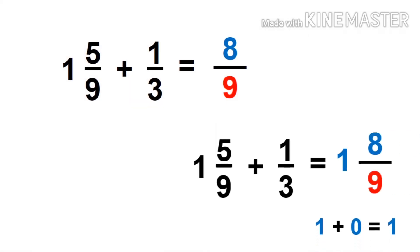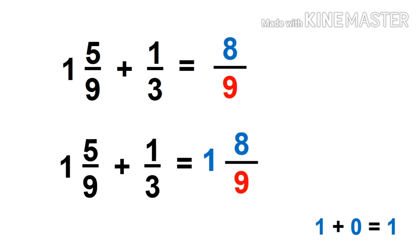Then we add our whole number. 1 plus 0 equals 1. So 1 and 5/9 plus 1/3 is equal to 1 and 8/9.